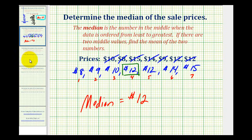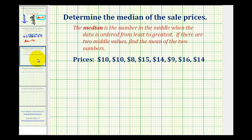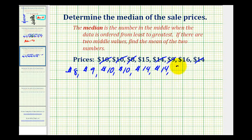Let's take a look at a second example. This is the same type of question, so we'll start by ordering the data from least to greatest. So we have two at ten dollars, two at fourteen dollars, one at fifteen dollars, and one at sixteen dollars.